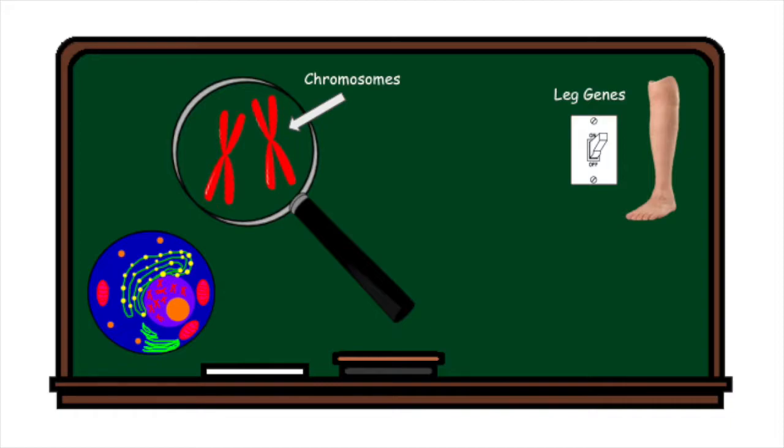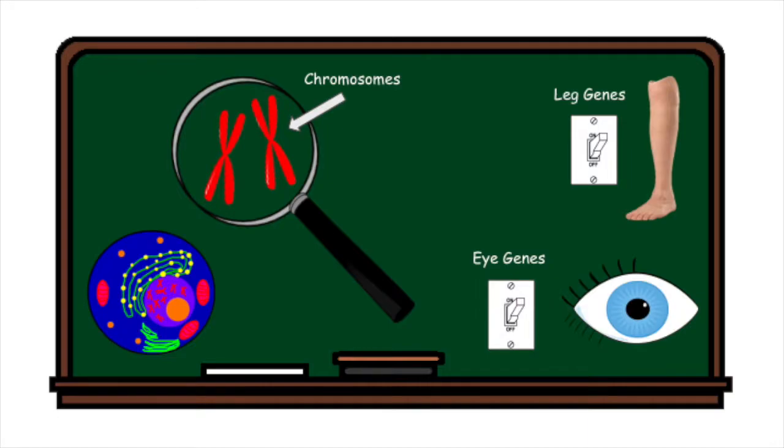For example, only leg genes are turned on in the legs, and other genes are turned off. Leg genes are turned off in the eye because they are not needed there. Eye genes would be turned on.